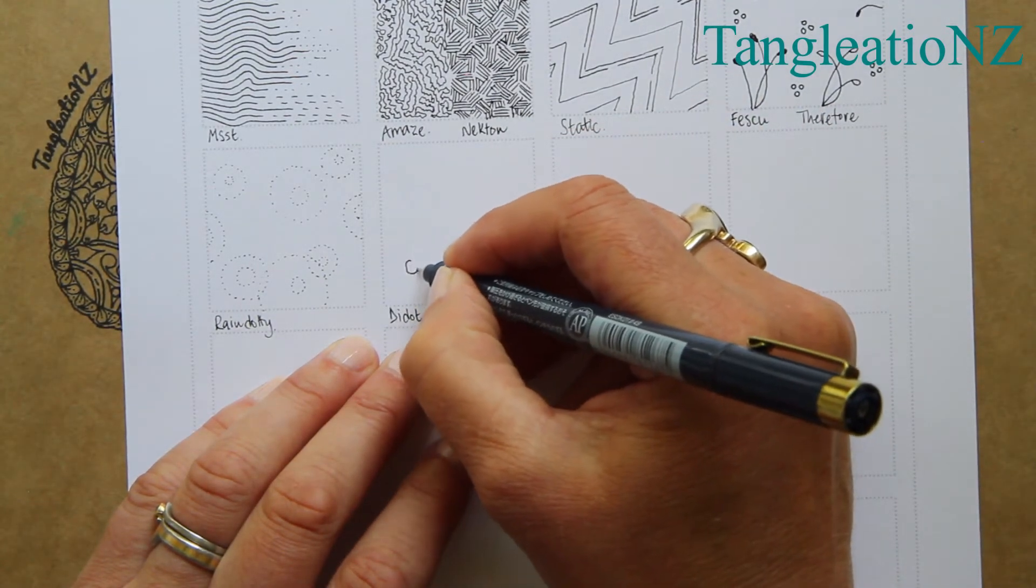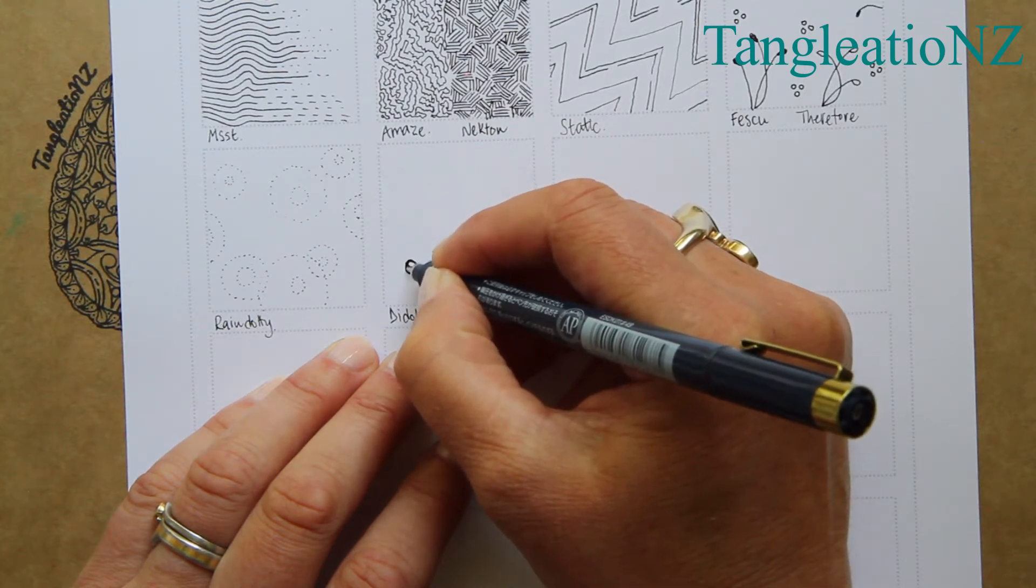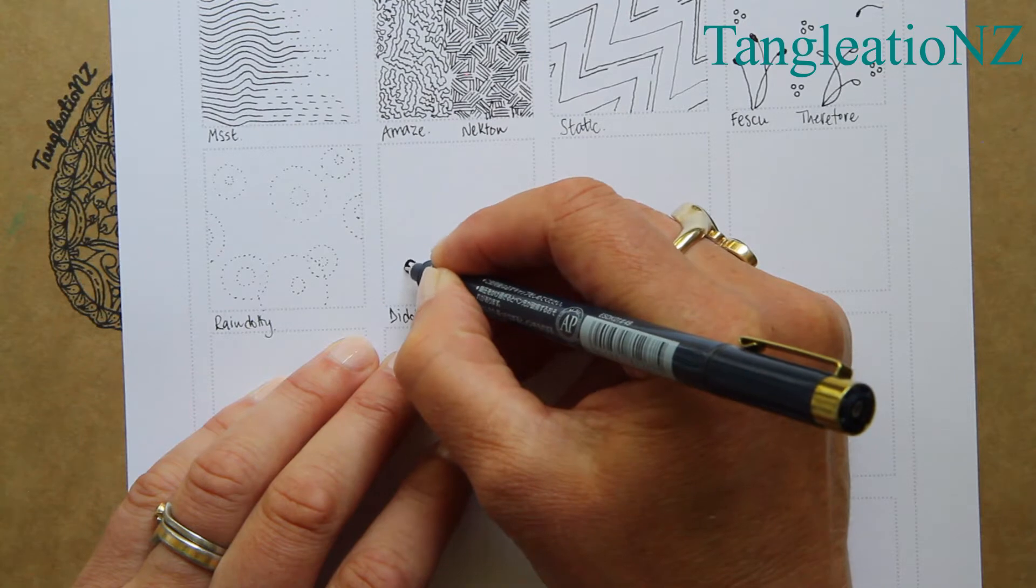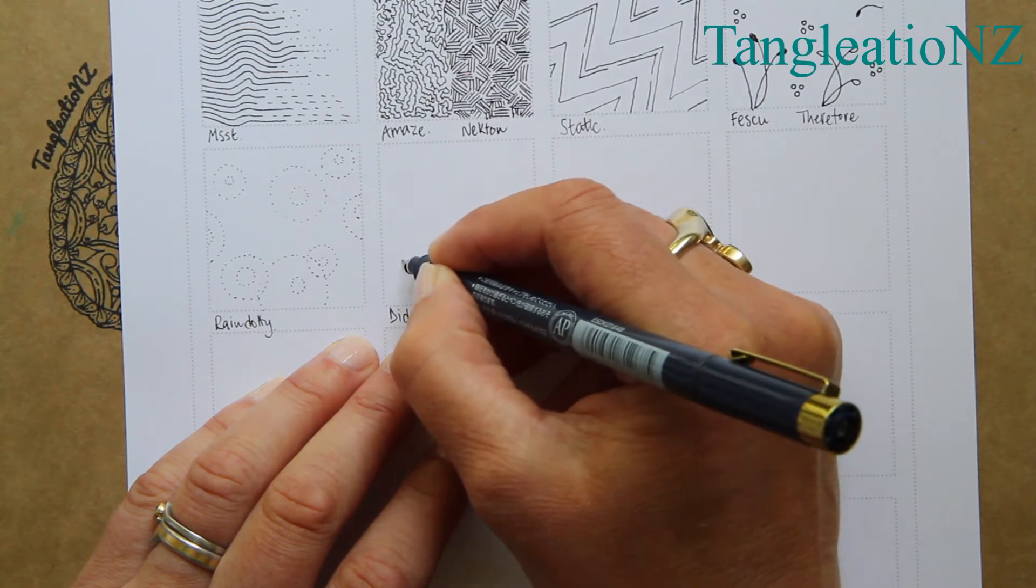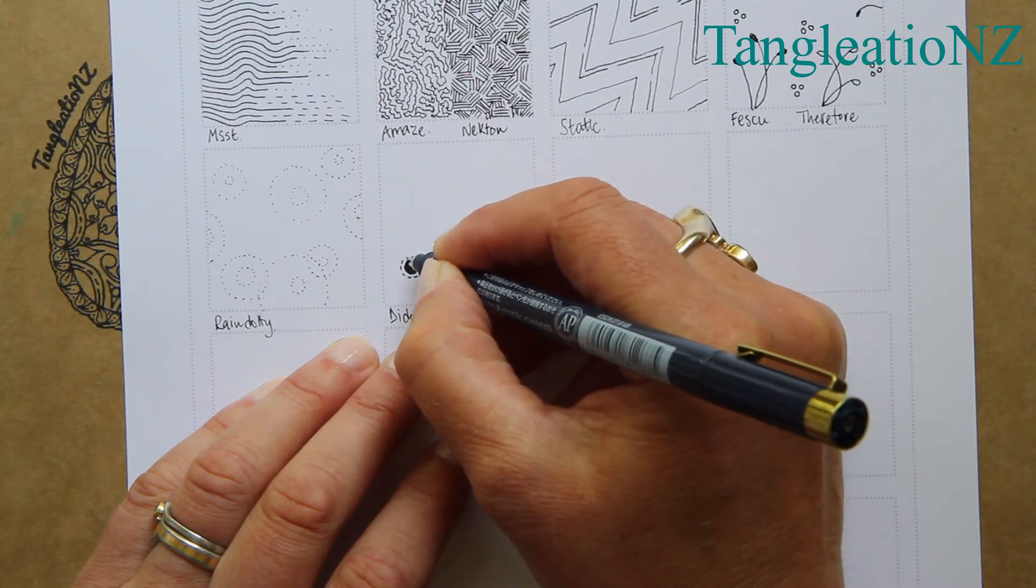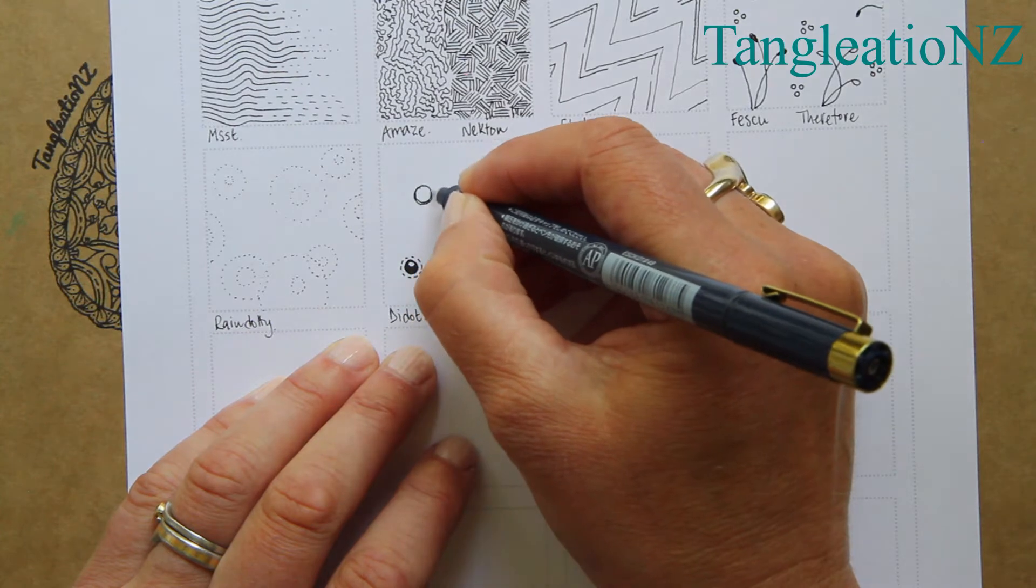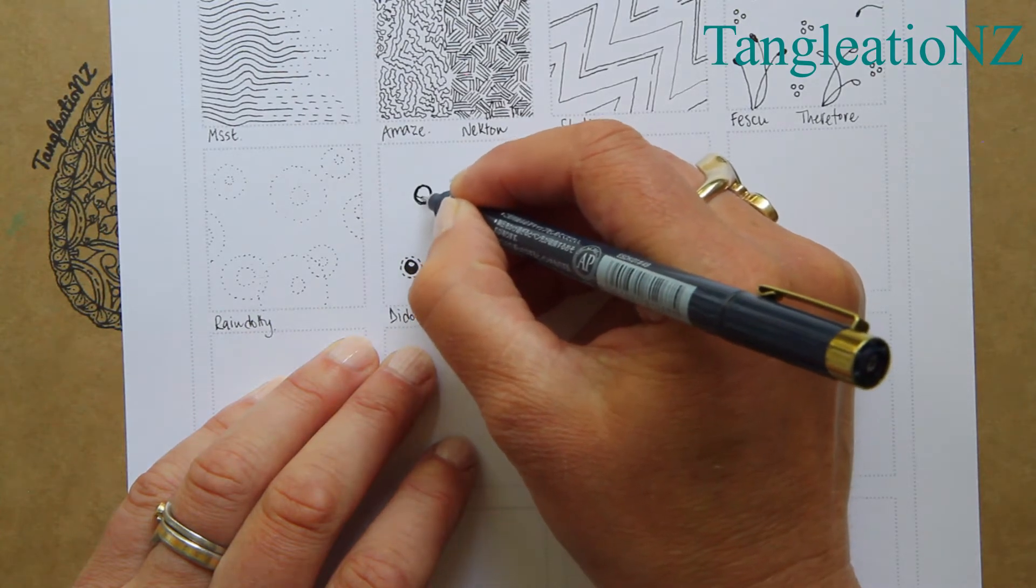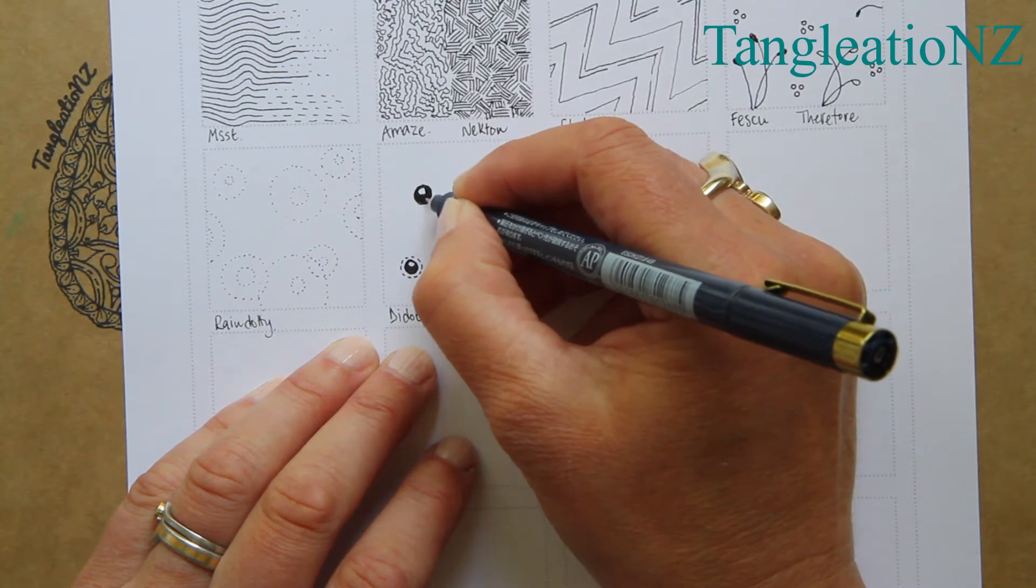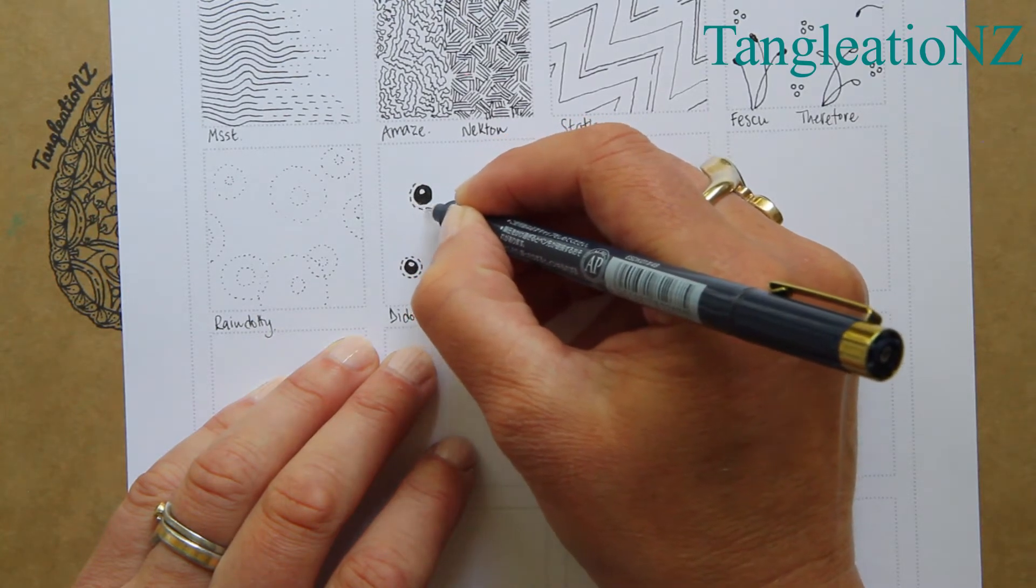When I first came across Didot I just couldn't get enough of it. This is one where we have a solid orb with a little bit of a reflection, and instead of dots we have a pathway of small deliberate lines that go around that orb. You can change the scale—if you want to make your orb slightly bigger, do so, but include a little highlight orb inside and then a path around.